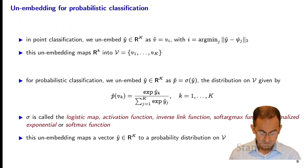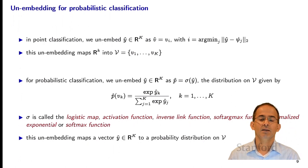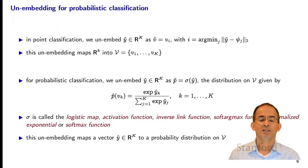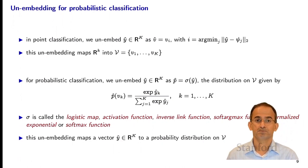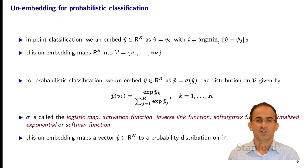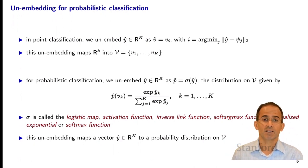We define p-hat of v_k to be the exponential of y-hat_k divided by the sum of the exponentials of y-hat_j. This map gives us p-hat of v_k for each k — it maps a vector y-hat in R^K to a probability distribution. If you sum from k=1 to K of p-hat of v_k, you get 1. And since it's the ratio of an exponential to the sum of exponentials, it's non-negative. So it satisfies both fundamental requirements for a probability distribution.